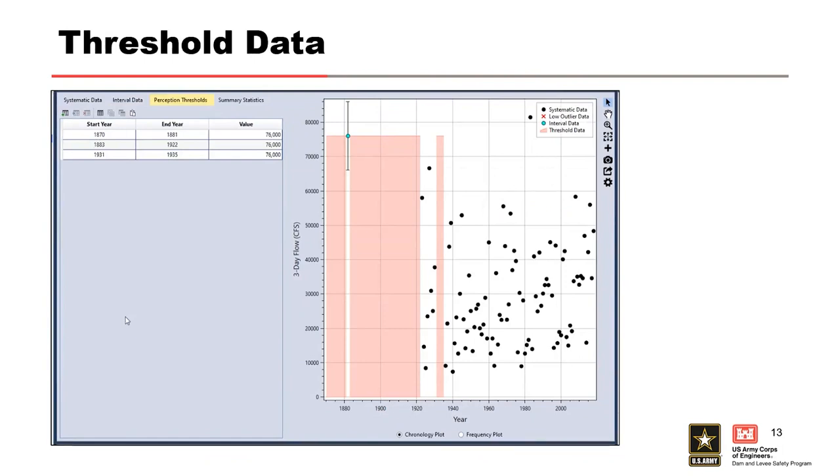Perception thresholds describe unobserved floods that occurred during a defined time period or whose magnitude is known to be less than some threshold value. Perception thresholds allow us to model periods of time where there were unobserved floods. Other sources of evidence are used to estimate the threshold value. For example, there might be evidence that a large flood during a historical period occurred in 1882 and had a magnitude of 76,000. The reasonable conclusion would be that all other unobserved floods during the historical period were less than 76,000 CFS. Therefore, the threshold is set to a value of 76,000. Thresholds can also be used to model unobserved flows for a crest stage gauge where the threshold would be equal to the base of the recording discharge for that gauge.